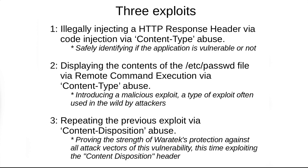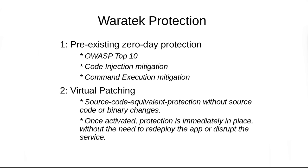The first exploit will perform a harmless code injection that can be used to safely identify if an application is vulnerable or not. The second exploit performs remote command execution, which is a more harmful attack and is the type of exploit used in the wild by attackers. The third exploit is a variation of the previous one, performing remote command execution through a different attack vector.